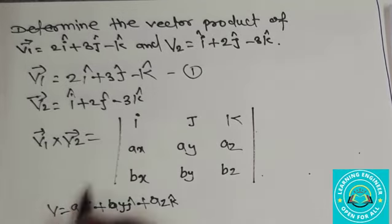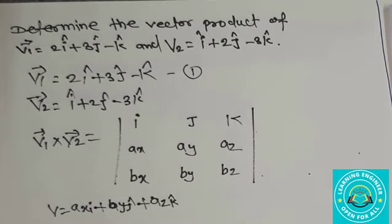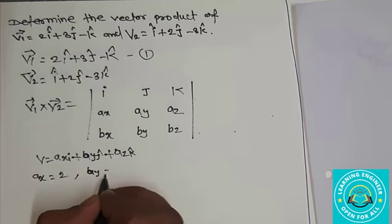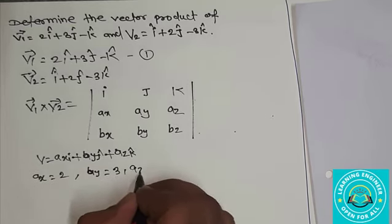Now, we consider equation 1. So, you will get ax is equal to 2, ay is equal to 3, and az is equal to minus 1.